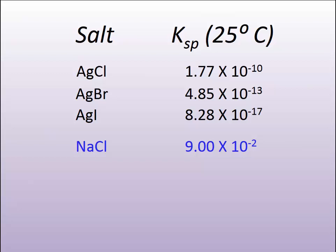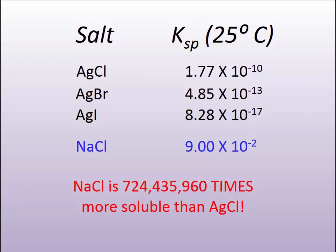In fact, if you just compare the ratios, compare the numbers, sodium chloride is about 700 million times more soluble than silver chloride, 700 million times.